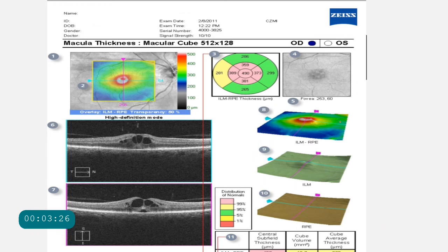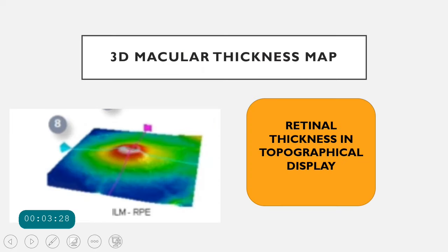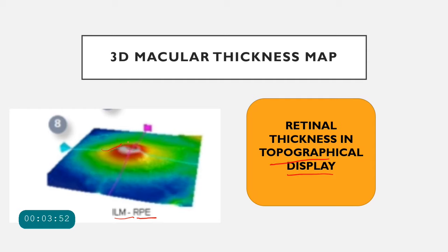Next is the 3D macular thickness map. This thickness map is calculated from the internal limiting membrane to the RPE, and the retinal thickness is depicted in a topographical display. Wherever there is greater thickness, it appears reddish in color; moderate elevations are in yellow; and thinner areas are represented in blue.